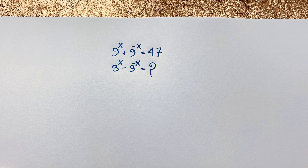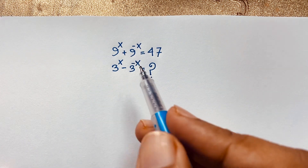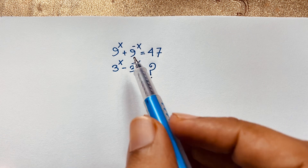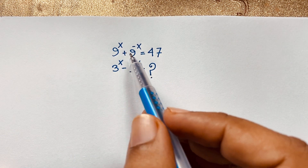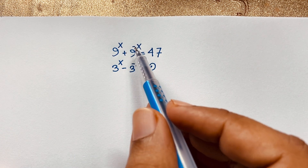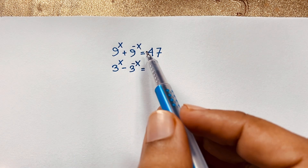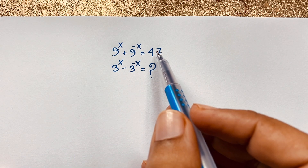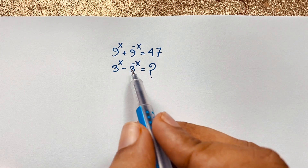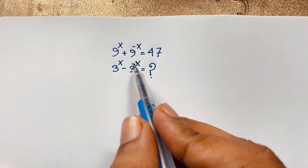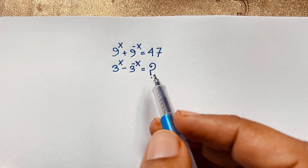Hello everyone, welcome to Rasha's Classroom. Today we are solving a tricky maths question which is: 9 to the power x plus 9 to the power minus x is equal to 47. And we need to find 3 to the power x minus 3 to the power minus x is equal to what?